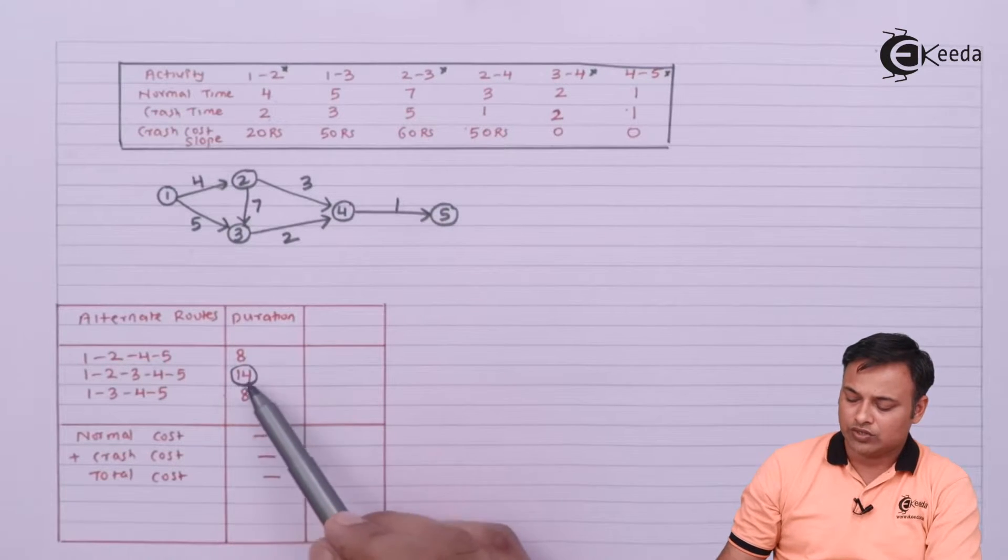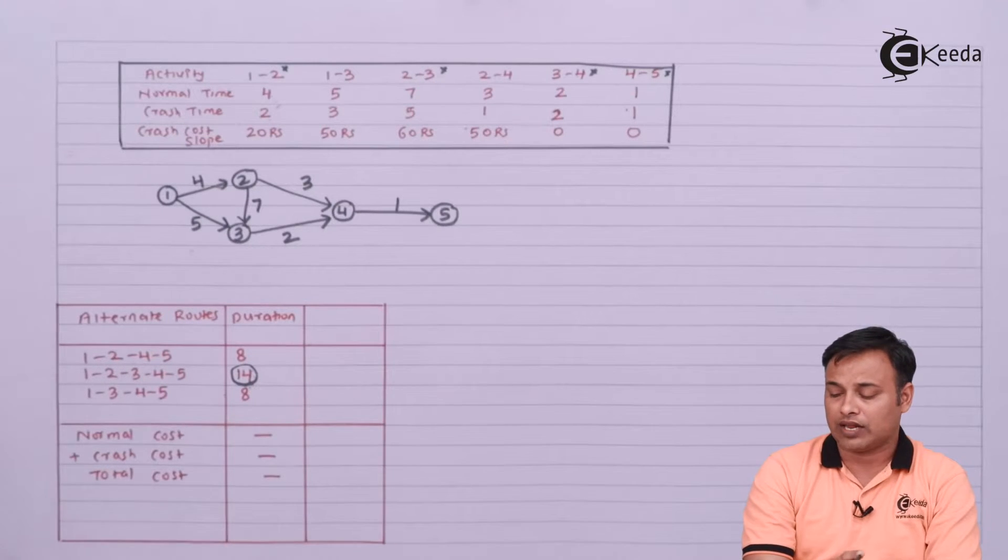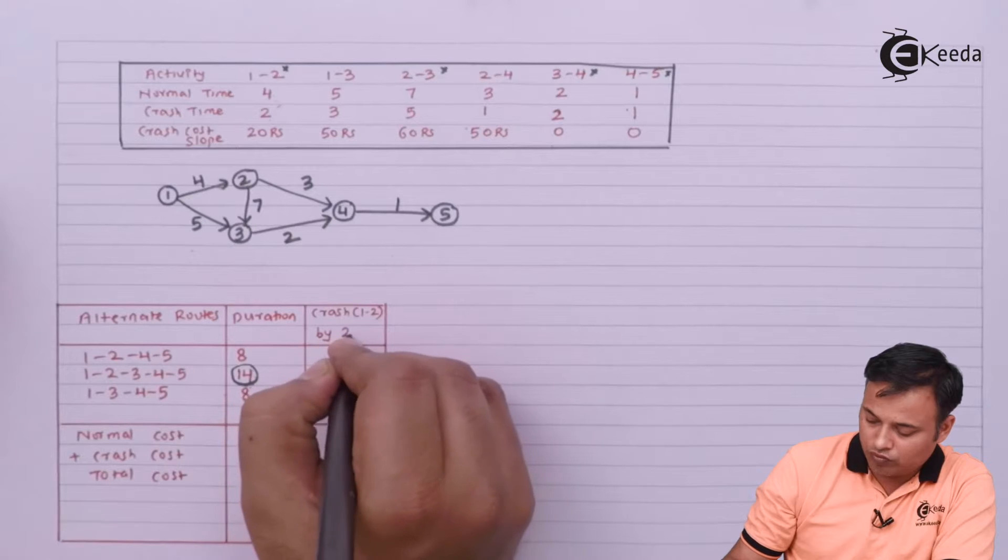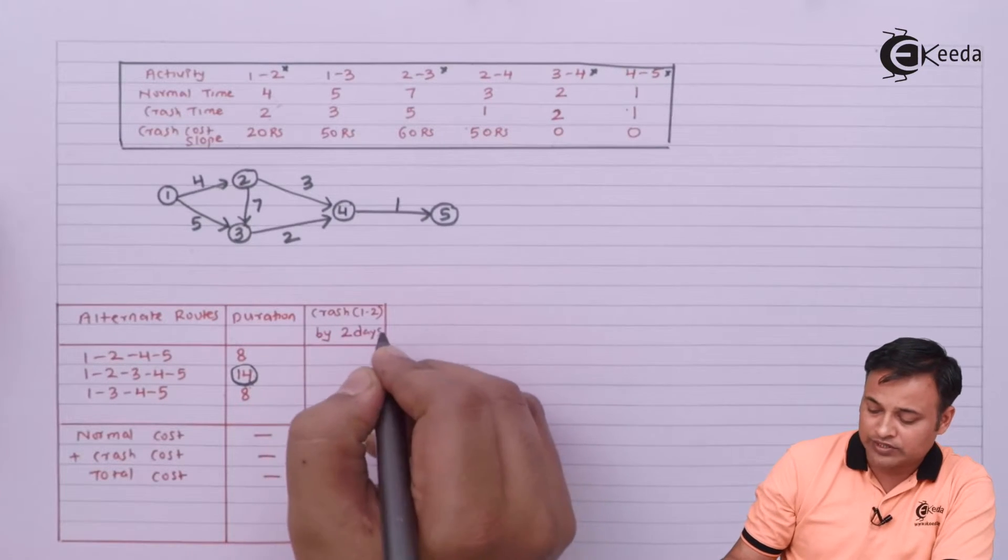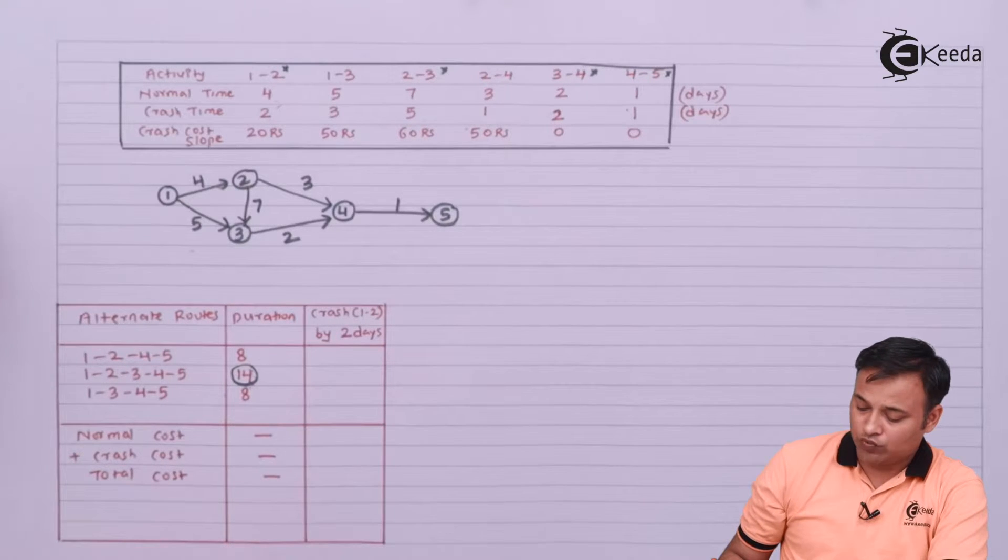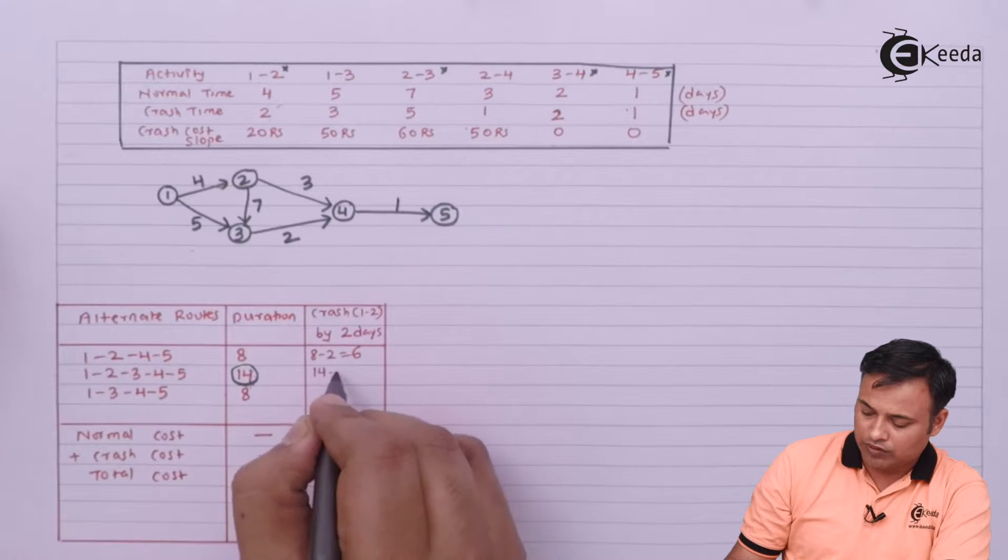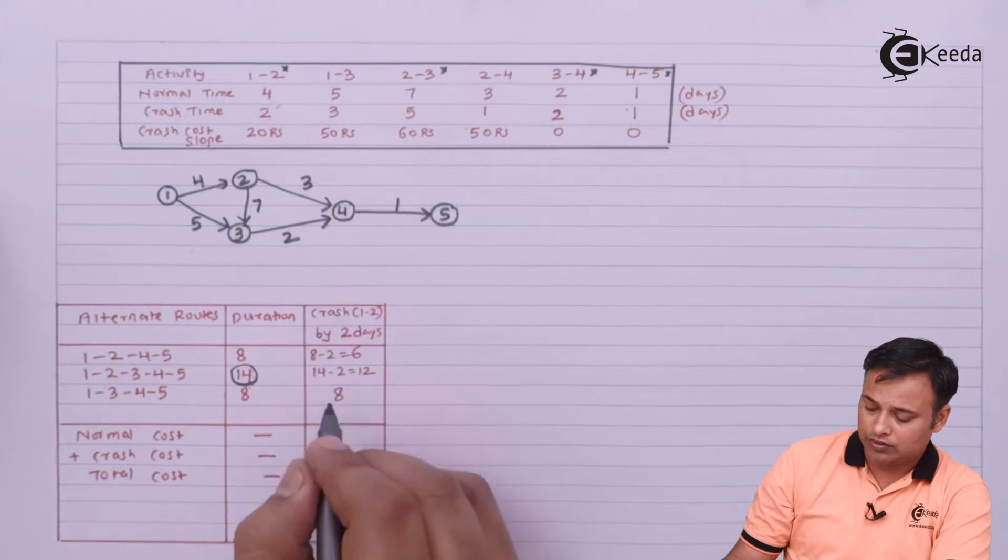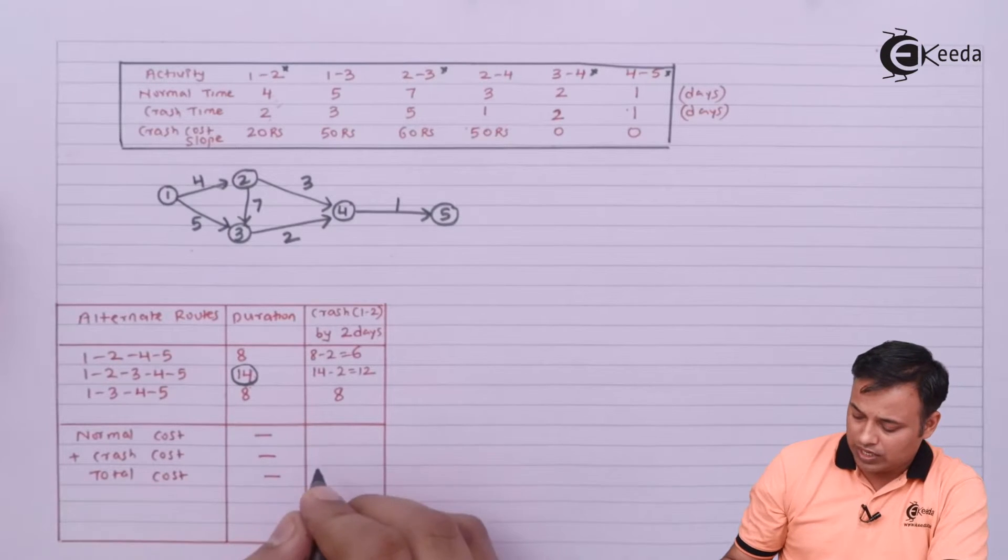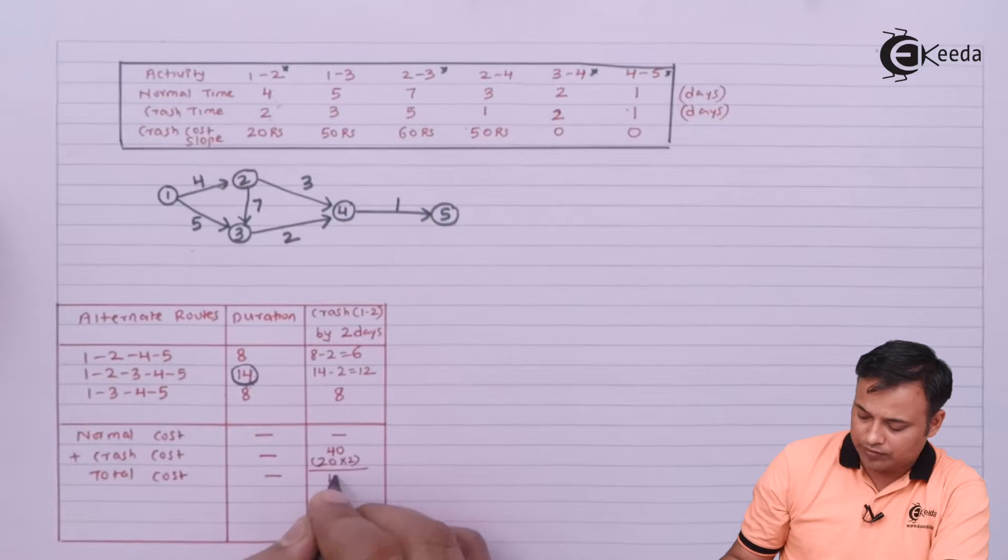The next highest number is 8, so the difference is 6. So 6 or 2, whichever is less will be our crashing. So I will crash 1-2 by 2 days. Let us assume these are days. So I will crash 1-2 by 2 days. It will become 8 minus 2, which is 6. This will become 14 minus 2, which is 12. So crash cost is 20 rupees per day, for 2 days, so my total cost will become 40.